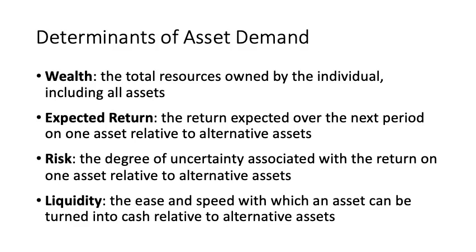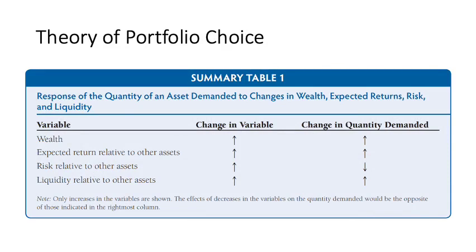For expected return, when the return expected over the next period on one asset relative to alternative assets is higher, we expect demand for that asset will increase. Risk has a negative relationship with demand because the majority of people are risk averse. Liquidity has a positive relationship with demand for assets. In this summary table we can see the expected relationship between these four variables and asset demand.